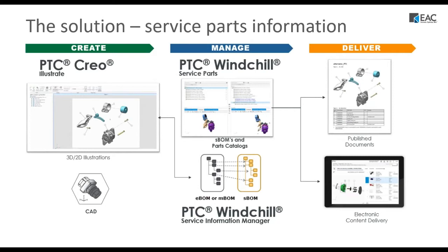Let me give us a roadmap for where we're going today. We're probably already familiar with creating CAD data in something like Creo Parametric, but then what do we do with that downstream? Our goal today is to talk about what you can do with that CAD data using other tools from PTC — specifically Illustrate and Windchill Service Parts. Deliverables will be things like published documents, service bulletins, or electronic delivery. We'll start with Creo and Windchill, look at things in Illustrate, manage things in service parts catalogs, and go from there.